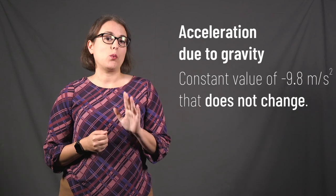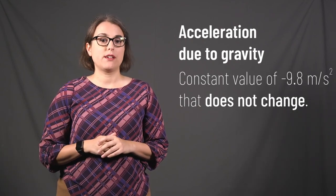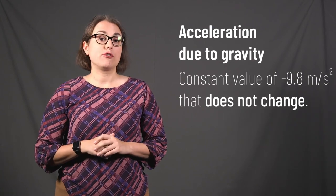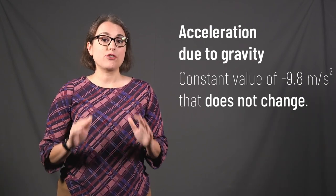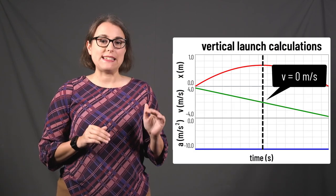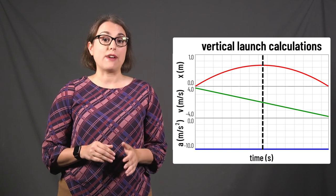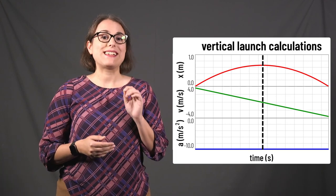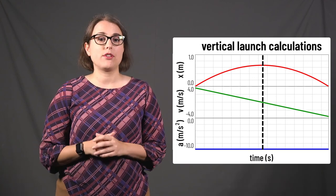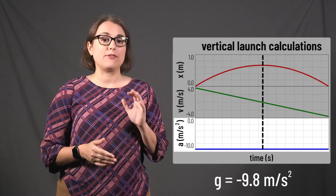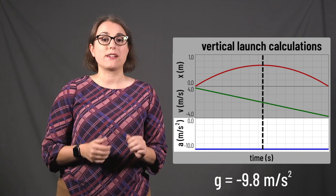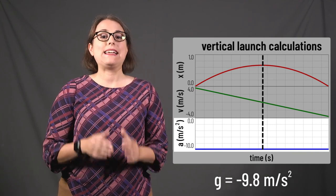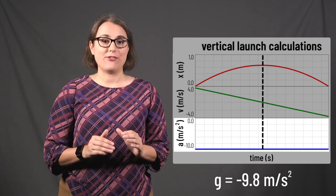There's one last thing to point out in free fall situations: gravity is constant and it never turns off. The ball may instantaneously stop at the top of its motion, but that's because gravity is continuously pushing down on the ball. As it moves upward, it slows down and must change direction before coming back down. The acceleration due to gravity is negative 9.8 meters per second squared the entire time the ball is moving — a constant value that never changes. Thanks for taking the time to learn about linear motion. Until next time, stay well.